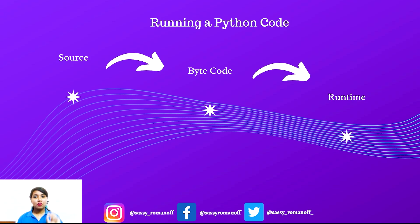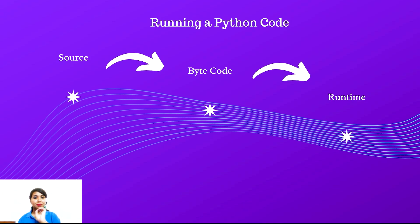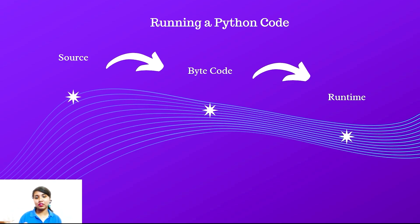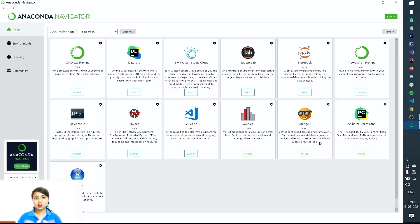In today's video I'll be showing how to identify a data type. First, how to run a Python code: the Python code is saved as a .py file, that source code is then converted to bytecode which is a .pyc file, and then the runtime executes the Python code. This is how we run a Python program.